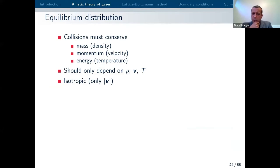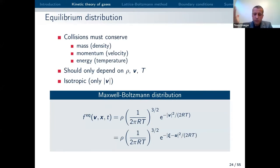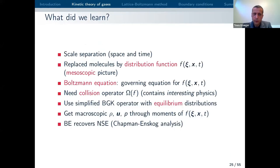Regarding the equilibrium distribution: you can write down the Maxwell-Boltzmann distribution, which is used for the equilibrium distribution function. Based on physical considerations, it can only depend on conserved quantities, which are density, momentum, and energy. This is well known and available in basically every textbook about statistical physics.